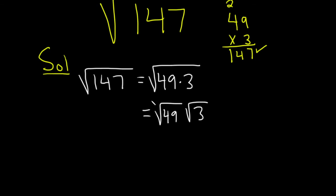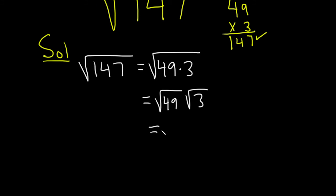And the square root of 49 is 7. So this is 7 square root of 3.